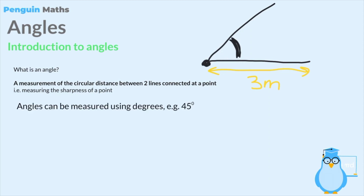Because an angle is measuring something - in this case a circular distance - we have to quantify how big or small that distance might be. Just as we use meters to quantify length, we need a unit for angles. One of the most popular ways of measuring an angle in mathematics is using degrees. We symbolize degrees with a small circle that sits on top of the number - for example, 45 with that little circle means 45 degrees.